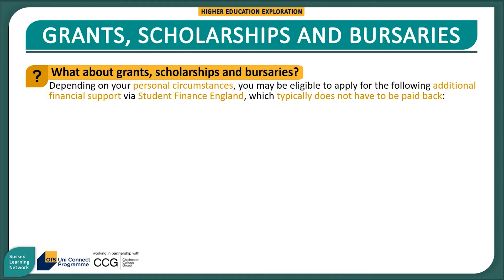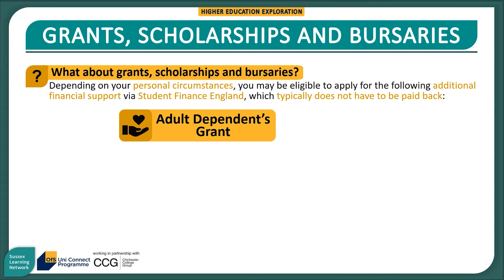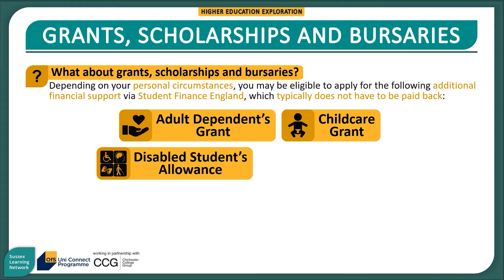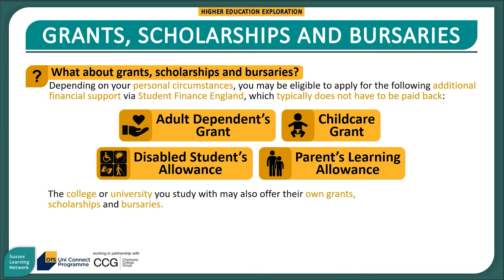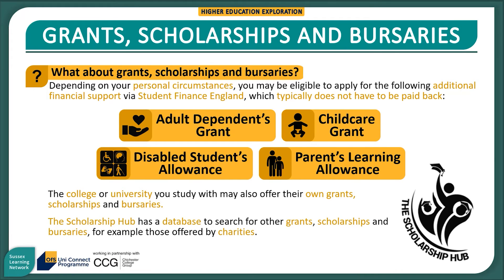In addition to your student loan, you may be eligible to receive grants, scholarships and bursaries from Student Finance England. These include the Adult Dependence Grant if you are financially responsible for another adult; the Child Care Grant to help towards childcare costs while studying; the Disabled Students Allowance for extra costs due to a disability, long-term health condition, mental health condition or specific learning difficulty such as dyslexia; and the Parents Learning Allowance if you have children you are financially responsible for. Your college or university may also offer their own grants, scholarships and bursaries. The Scholarship Hub website has a database to search for others, such as those offered by charities. Grants, scholarships and bursaries do not typically need to be paid back, but do check the fine print before you sign up.